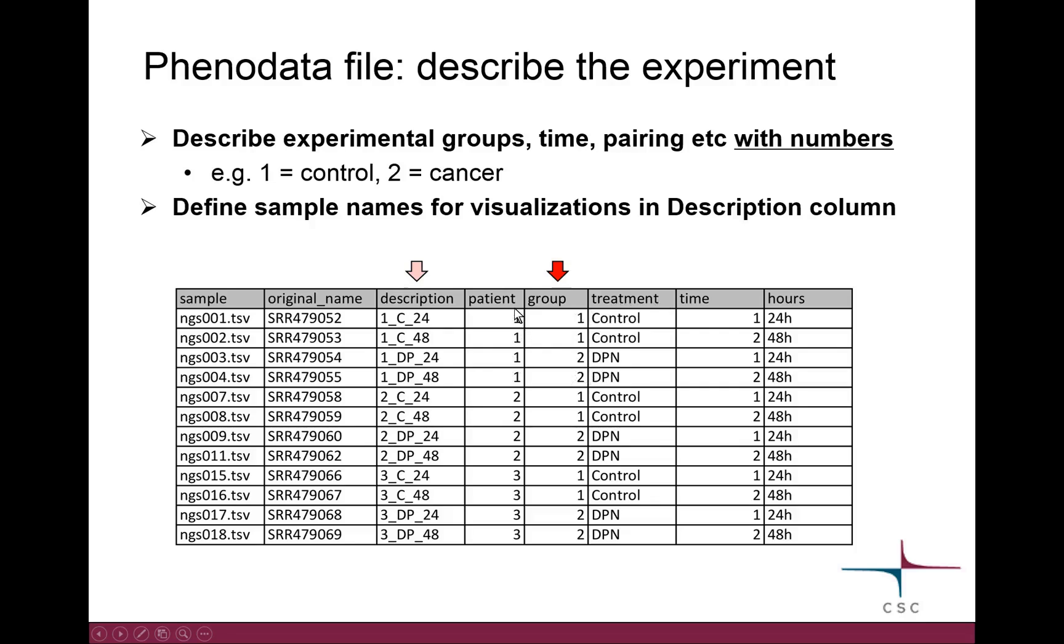In this particular example, I have also samples from several cancer patients, actually three different patients, and I might want to take that information into account later on in the statistical testing. So I have marked the samples that come from the same patient with the same number. And finally, in my case here, I also have a bit of a time course. The samples were treated with either control or the chemical for 24 or 48 hours. So essentially I have two different time points, and I just use numbers to indicate this. I have sort of binned this into two bins.